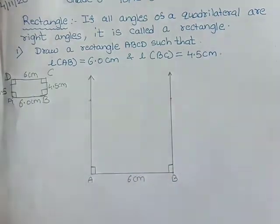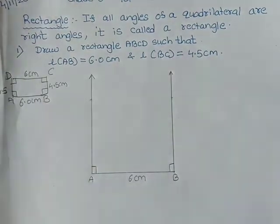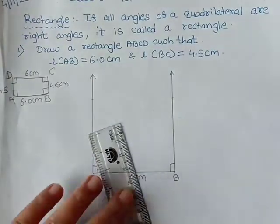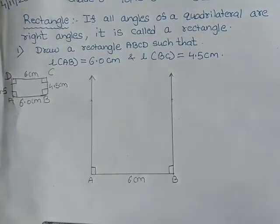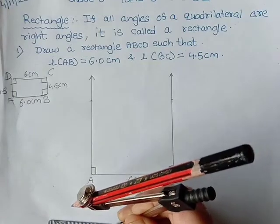Now how much is this BC? It is going to be 4.5. So taking compass 4.5, and just give an arc. Or you can use the scale also like this, but this is more accurate method. So you take 4.5 in your compass.